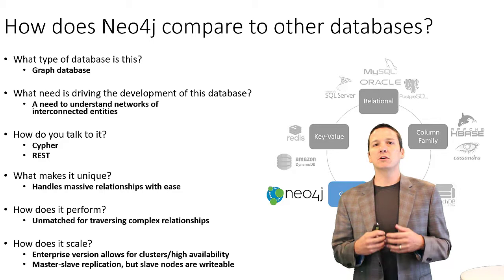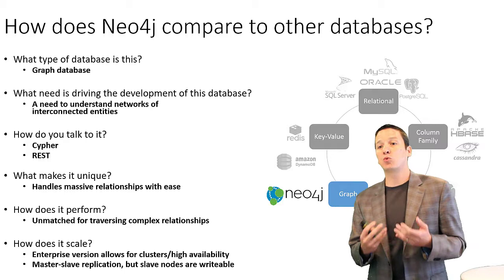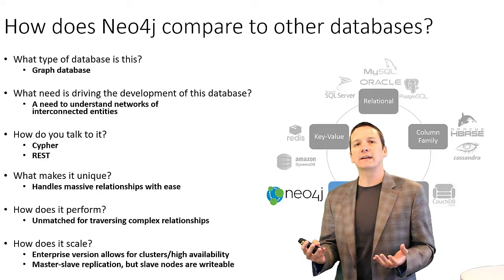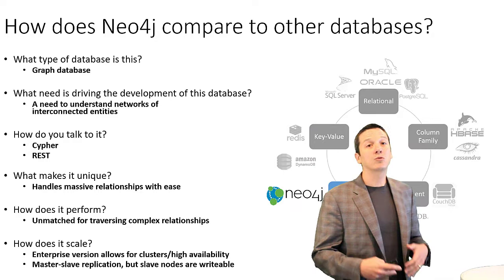Most databases are concerned about things, whereas a graph database is more concerned about the relationships between things, and it's this need to understand this network of interconnected entities that has driven the development of Neo4j.